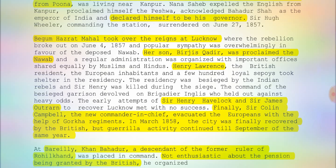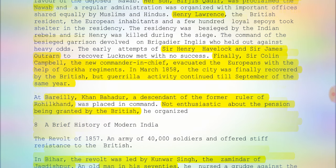Finally, it was Sir Colin Campbell, the new Commander-in-Chief, who evacuated the Europeans with the help of Gurkha regiments. In March 1858, the city was finally recovered by the British, but guerrilla activities continued till September 1858. At Bareilly, it was Khan Bahadur Khan, a descendant of the former ruler of Rohilkhand, who was placed in command. He was not enthusiastic about the pension being granted by the British and organized the revolt with an army of 40,000 soldiers, offering stiff resistance to the British.